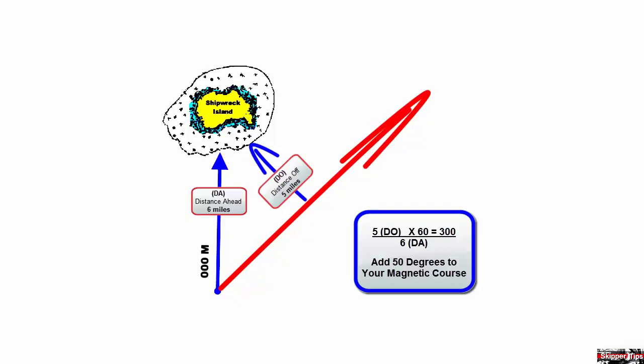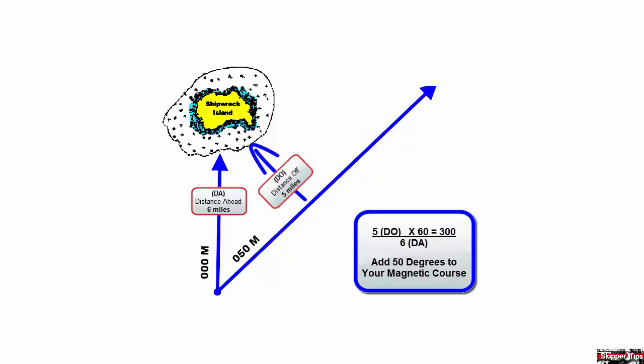Because we are changing course to the right, we want to add 50 degrees to our magnetic course of zero zero zero degrees, and this gives us the new course to steer, zero five zero degrees magnetic.